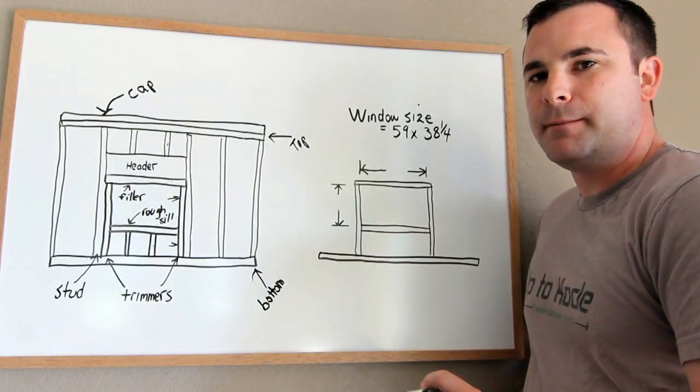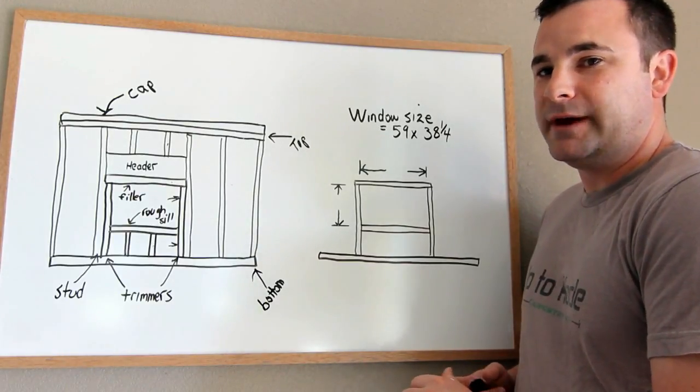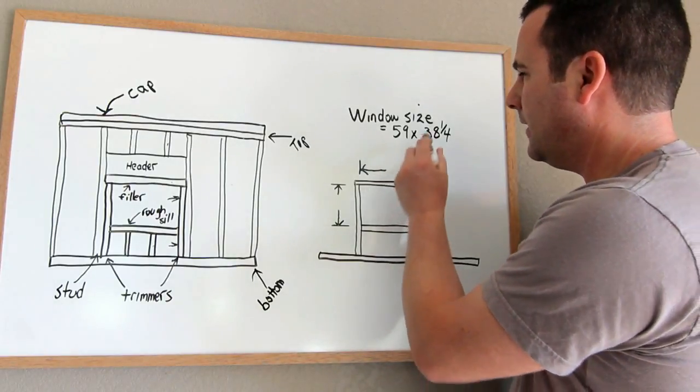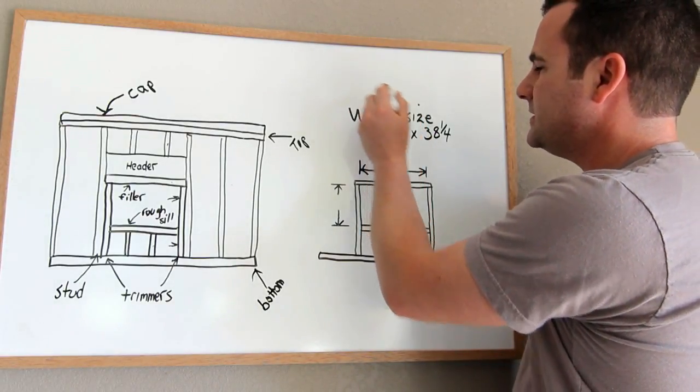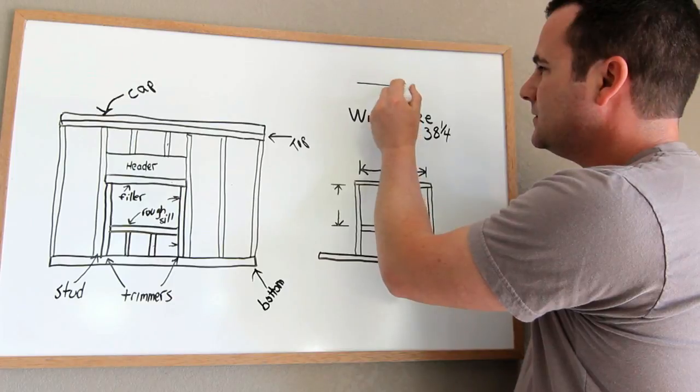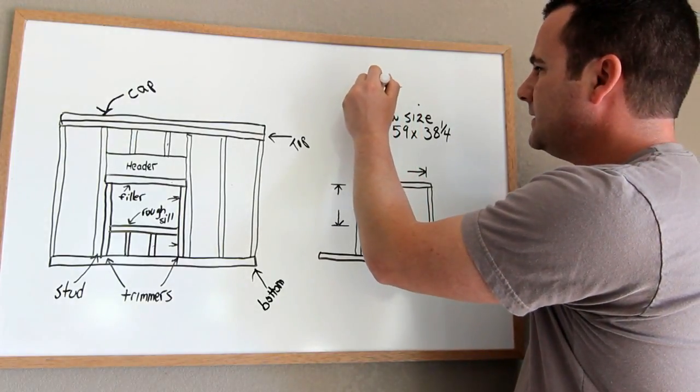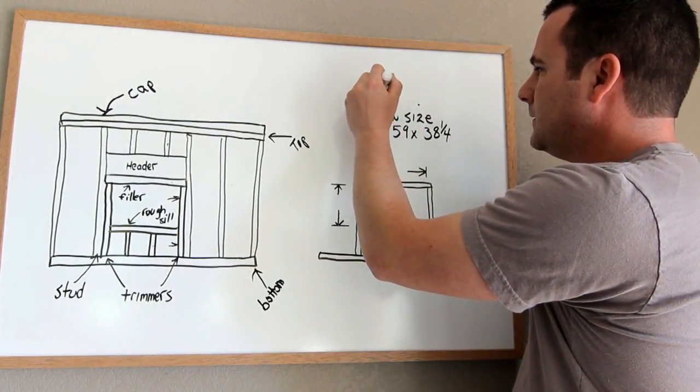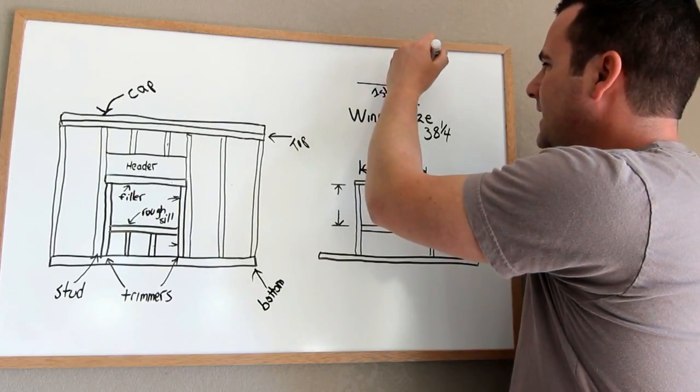Now whenever you're measuring anything, it's always the horizontal measurement first. So that one's first, and then the vertical measurement second.